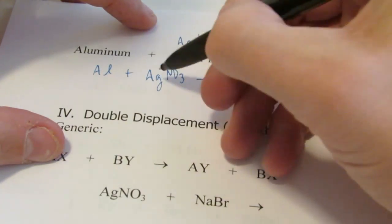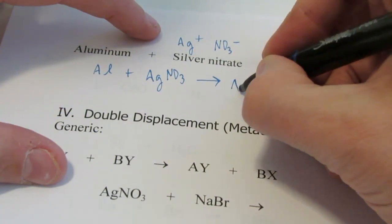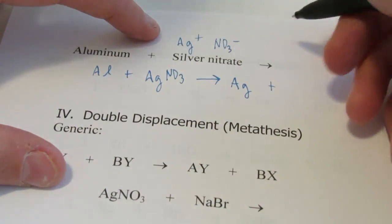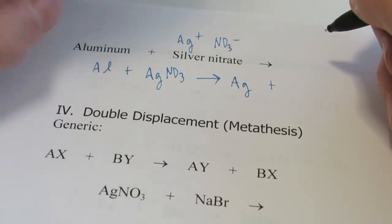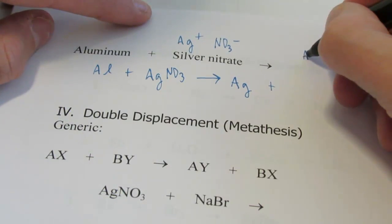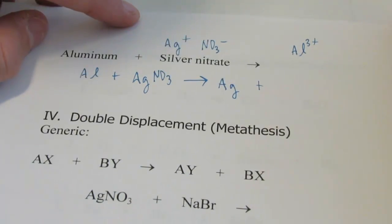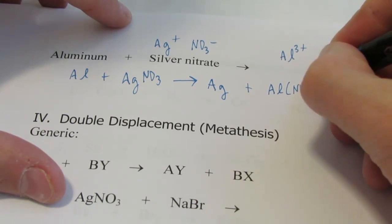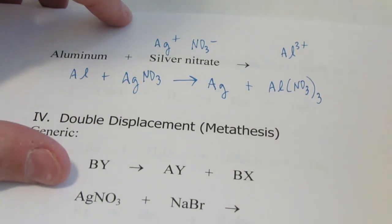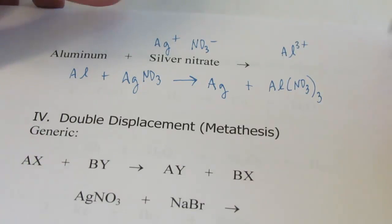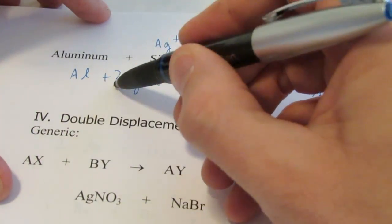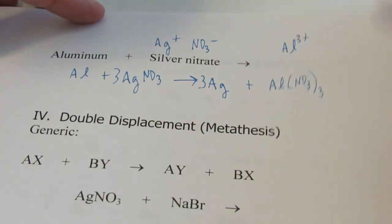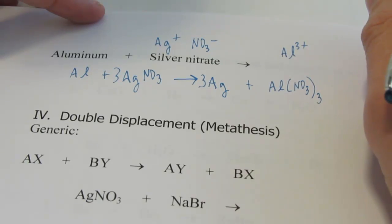So aluminum is a metal. It's going to switch with silver, which is a metal. So we're going to get silver all by its lonesome. And then aluminum gets together with nitrate. Now be careful when you write the formula. Remember, aluminum is always 3 positive. So we form Al(NO3)3, aluminum nitrate. Doesn't balance, but we can fix that. We'll put a 3 here to give me 3 nitrates on both sides, and a 3 there to give me 3 silvers. Your homework's a lot like this one.